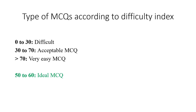Based on the difficulty index, MCQs are classified as: difficult if the index is between 0 and 30%, acceptable if between 30 and 70%, and very easy if more than 70%. Ideally, the difficulty index should be between 50 to 60%. Very easy MCQs are generally placed at the beginning of the test so that students get a psychological boost when they start.